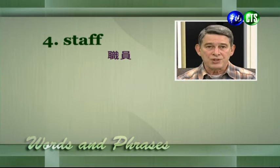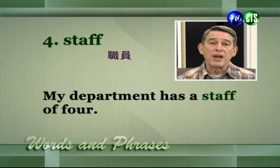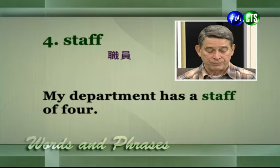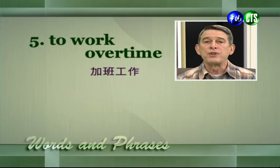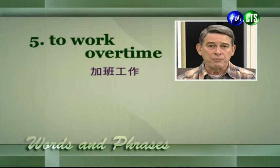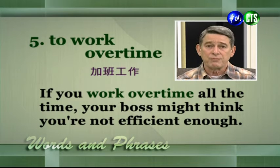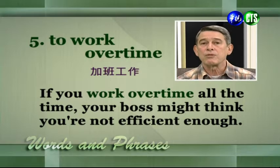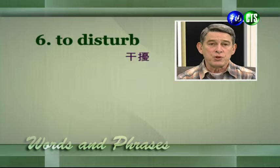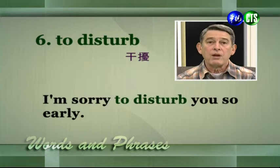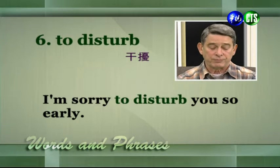Staff — 職員。My department has a staff of four. 我的部門有四位職員。To work overtime — 加班工作。If you work overtime all the time, your boss might think you're not efficient enough. 如果你老是加班，老闆可能會覺得你效率不夠。這一點大家要注意，有的人有這種錯誤觀念，尤其是剛進入職場的人，他會覺得每天加班老闆一定覺得他非常努力，但其實老闆可能會覺得你效率不夠。To disturb — 干擾、打擾。I'm sorry to disturb you so early. 很抱歉，這麼早打擾您。